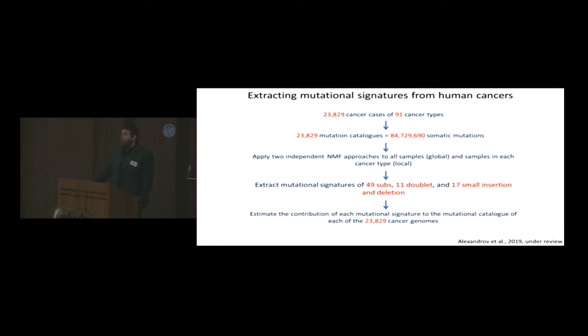We applied two independent approaches for analysis of mutational signatures. One is the one we developed originally at the Sanger, and another one that was developed subsequently at the Broad Institute. Overall, we have been able to find 49 substitution signatures, 11 doublet signatures, and 17 small insertion signatures. What I'm going to do in this talk is show them to you, tell you the ones we understand, the ones that we have assigned to putative etiology, and then give you three stories in three slides to tell you why you should care about mutational signatures.